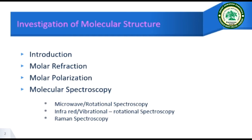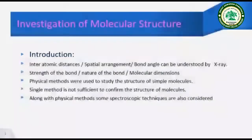Now we proceed to the introductory part of the investigation of molecular structure chapter. We consider what is there in a molecule. There are different types of molecules: monoatomic, diatomic, triatomic, tetraatomic, and polyatomic molecules. In the structure of molecules, we consider interatomic distances — meaning the separation distances between two consecutive atoms.